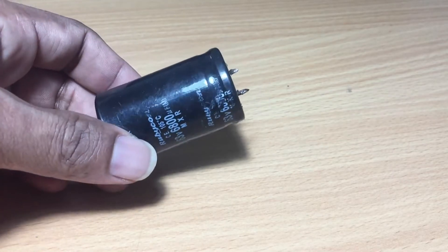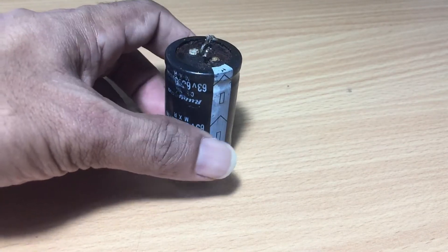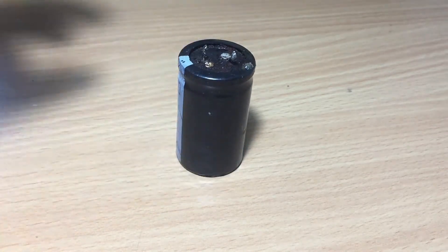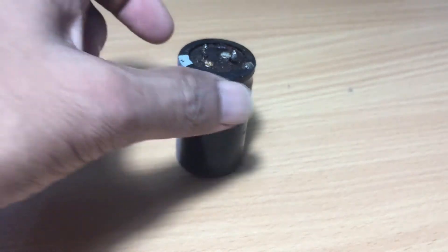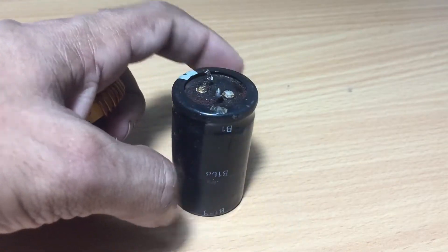After all the parts are tested, you can build this project watching this video. Take the 6800 microfarad capacitor and connect one end of the coil to the positive side of the capacitor.